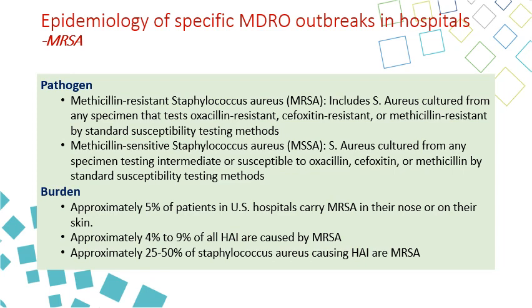If you have 100 cases of Staph aureus and 30 of them are MRSA, then by default 70 are MSSA. MRSA is the abbreviation of methicillin-resistant Staph aureus. Any Staph aureus resistant to one of these three drugs — oxacillin, dicloxacillin, or methicillin — will be considered MRSA. If they are sensitive to these drugs, then they are MSSA.